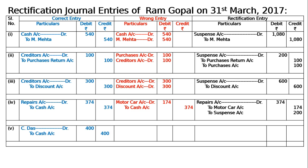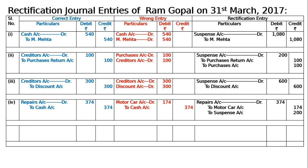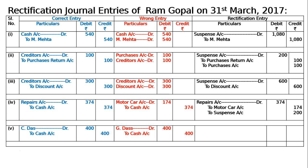Fifth one: Rs. 400 paid to C Das was debited to the account of D Das. The correct entry is C Das debited to cash account, Rs. 400. It was debited to the account of D Das — D Das to cash, Rs. 400. Now C Das will come and D Das will go. It is C Das debited to D Das, Rs. 400. This is rectified.